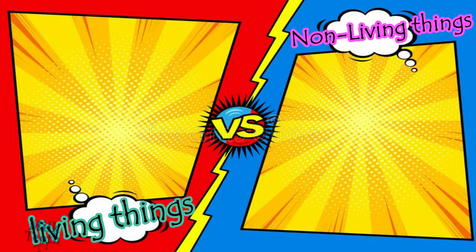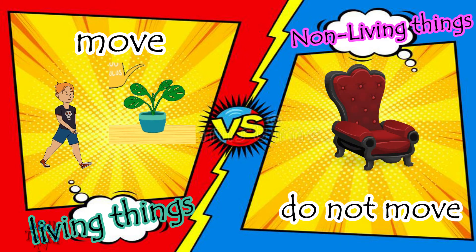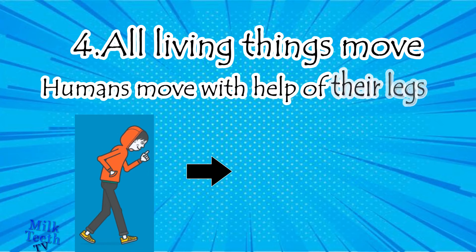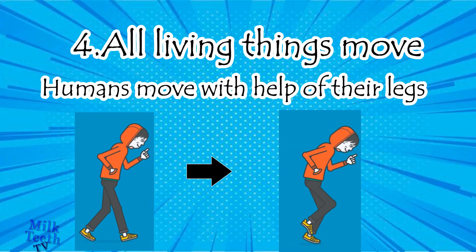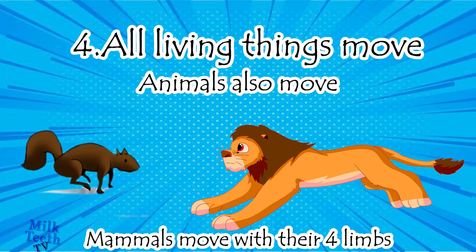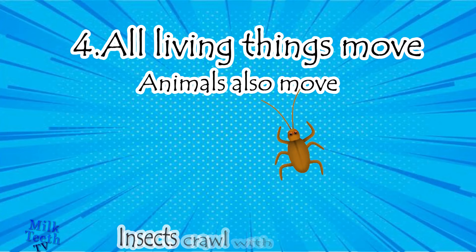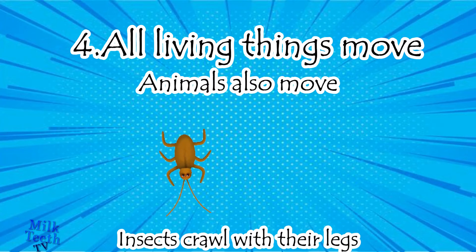The fourth difference is that all living things move — humans can move, and plants can move too — whereas non-living things do not move on their own. Look at this chair: can it move on its own? No. Humans move with the help of their legs, and animals also move — mammals move with their four limbs, insects crawl with their legs.